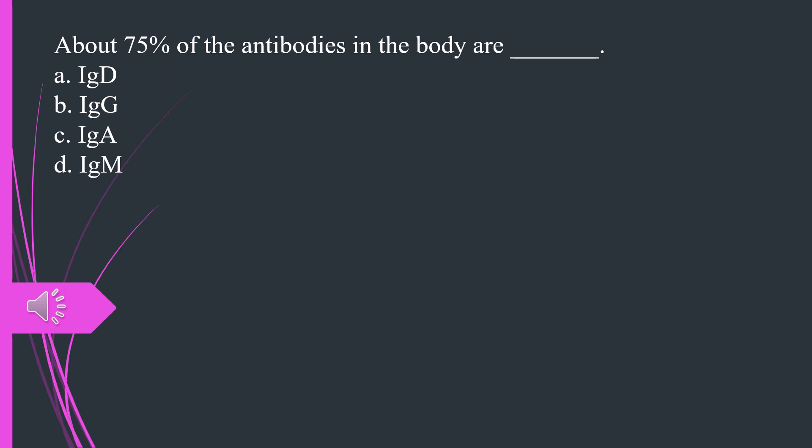About 75% of the antibodies in the body are A. IgG B. IgG C. IgA D. IgM. The answer is B, IgG.